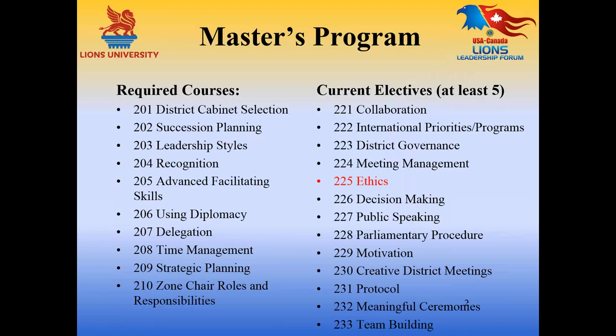Ethics is course 225. It is an elective course for the Lyons University Master's Program, designed to help Lyons lead at the district level. The master's program involves the completion of 10 required courses and at least five elective courses. On the left side of your screen you'll notice the 10 required courses, and on the right side is a listing of 13 elective courses that will be offered throughout the year.